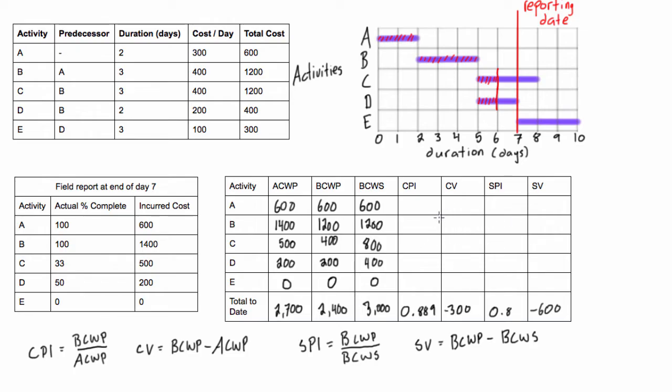But if you recall from that video, we figured out based on our cost performance index and cost variance that this project was over budget because the CPI is less than 1 and the CV is negative. Both of those things tell us exactly the same thing - that this project was over budget.